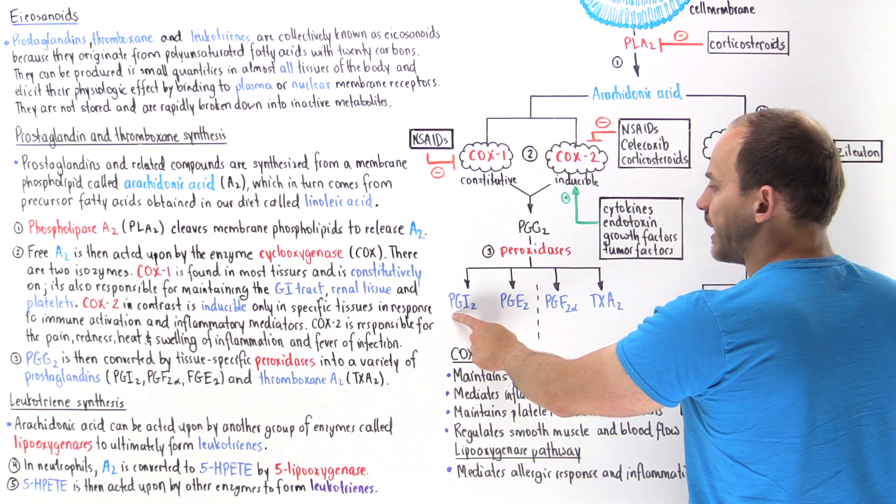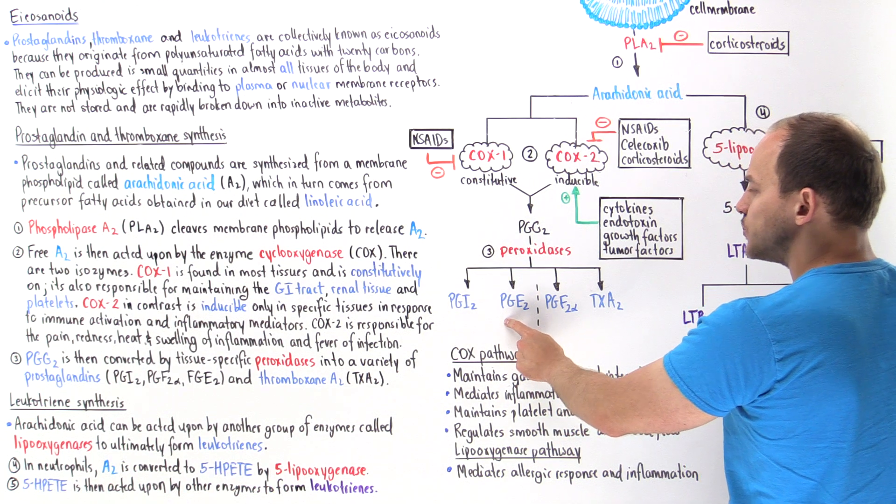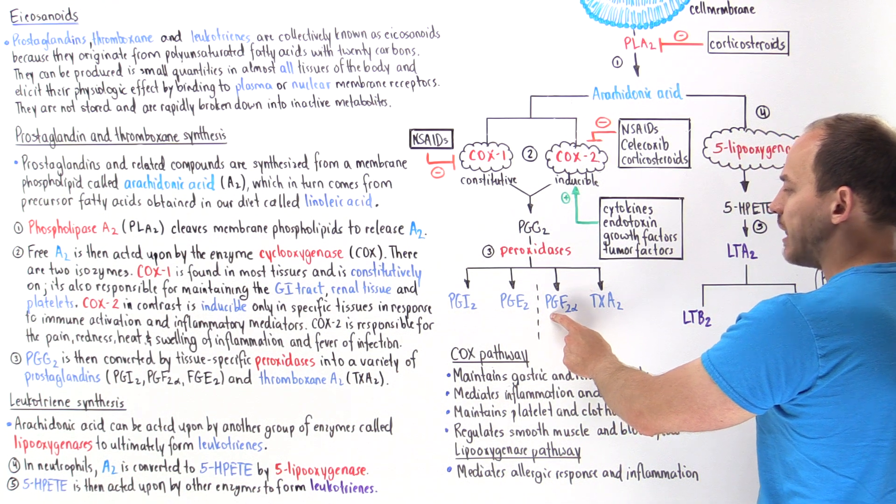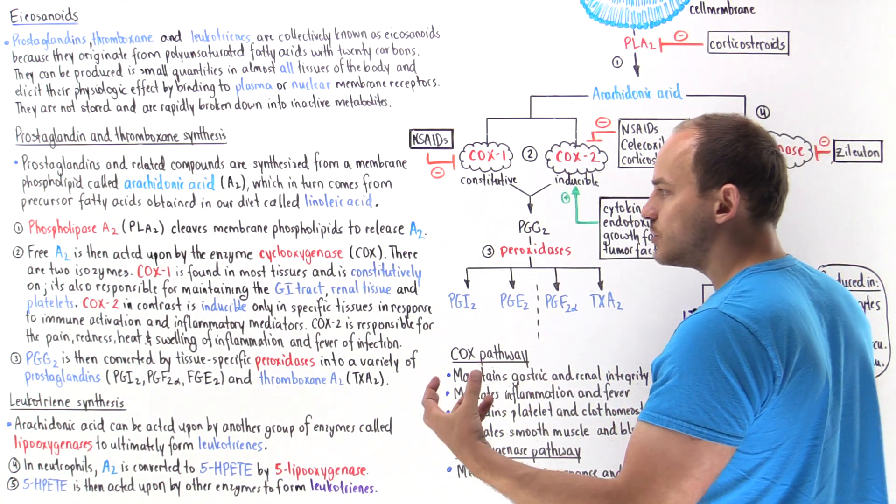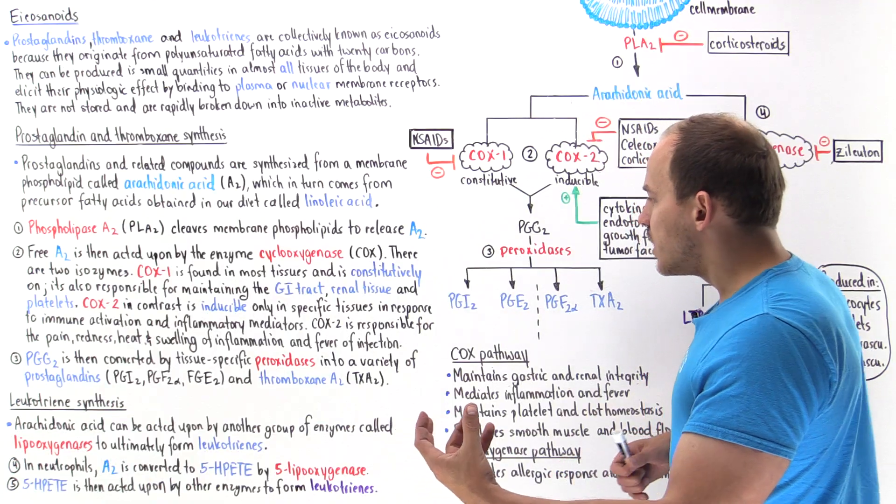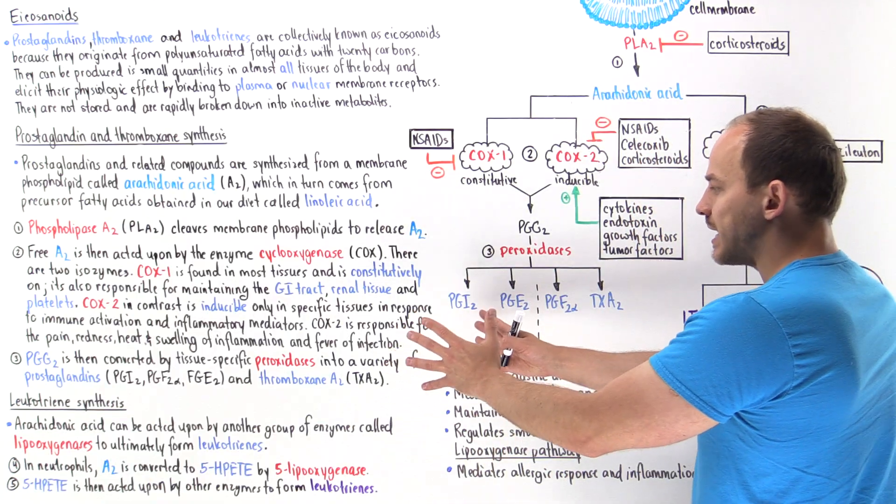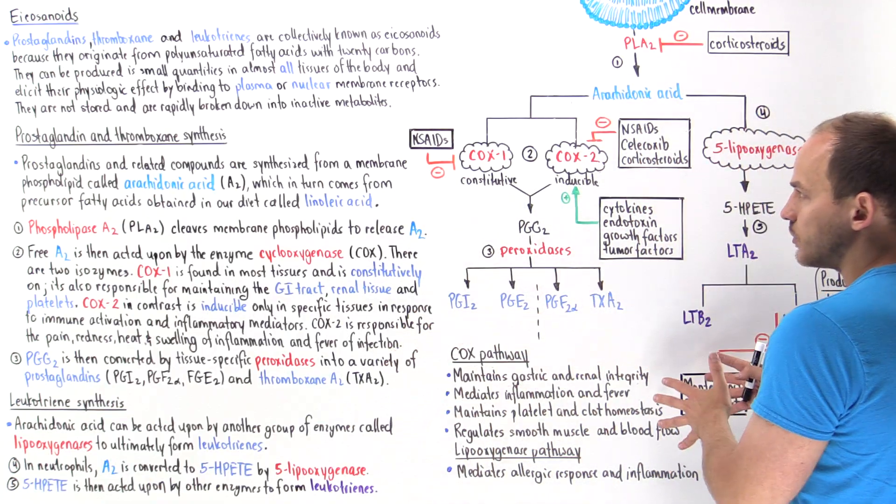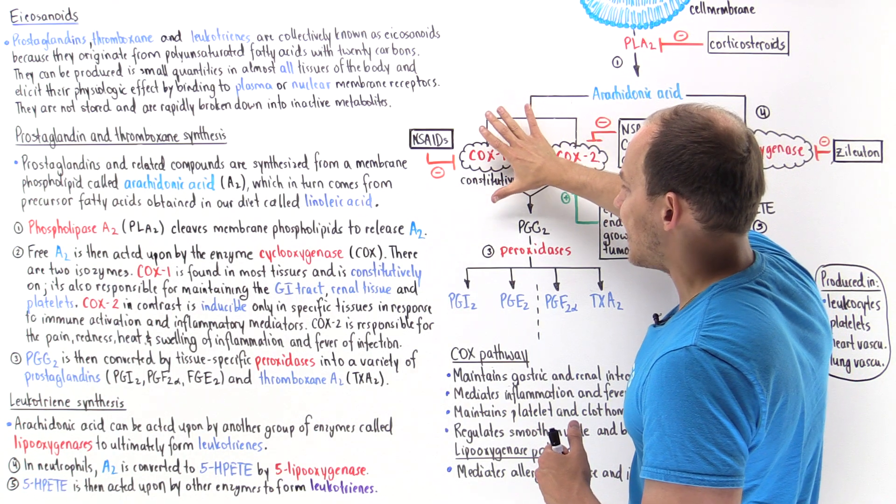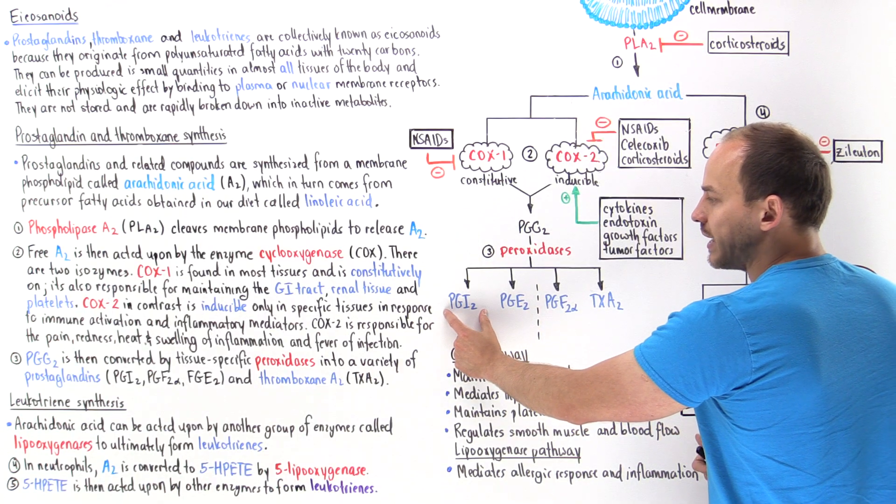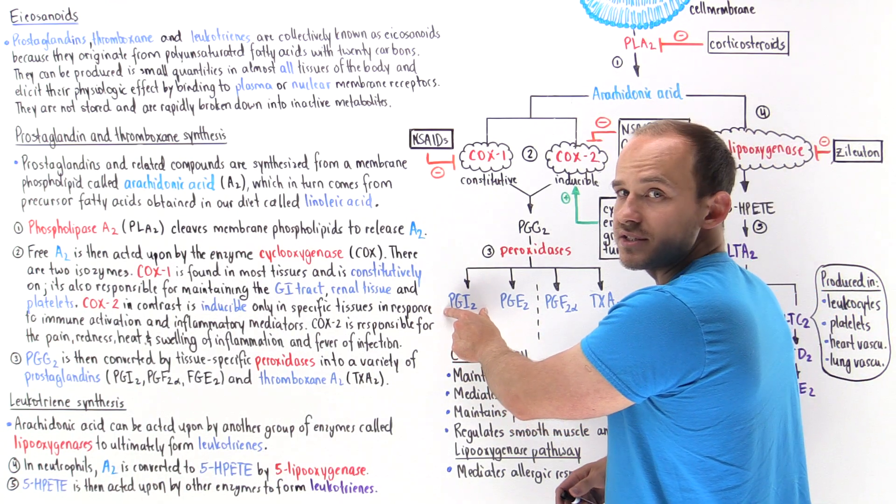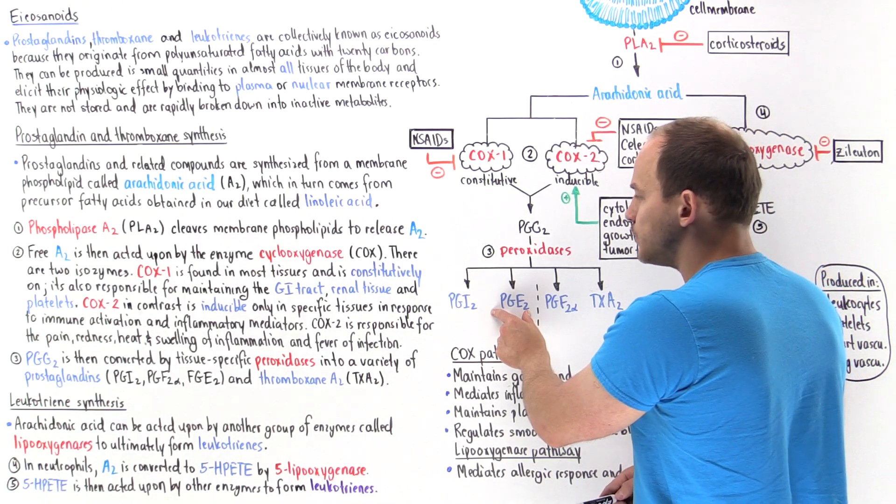We have prostaglandin I2, prostaglandin E2, prostaglandin F2-alpha, and thromboxane A2. Depending on the conditions in the cell, we can synthesize specific types of molecules and not others. Usually when COX1 is on, we synthesize prostaglandin I2, also known as prostacyclin, and prostaglandin E2.